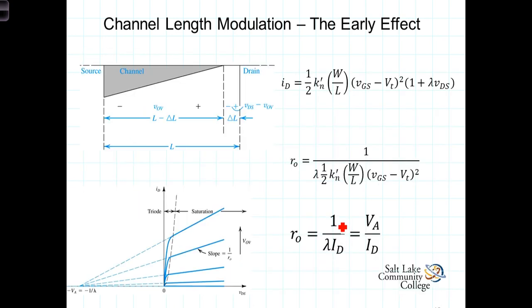We can account for this dependency of I-sub-D on VDS by adding a term to the formula that we've already derived for the current in saturation. So this is that constant current term. Notice that it's not dependent upon VDS. We can show the dependency of I-sub-D on VDS by adding this term here, 1 plus lambda times VDS. The lambda term is a device parameter that depends on the process technology and the channel length, L.